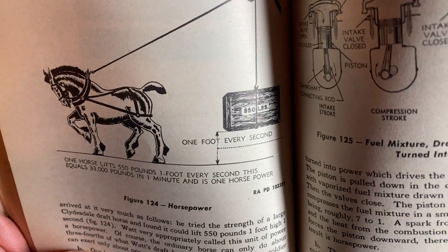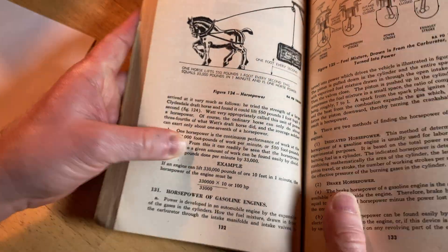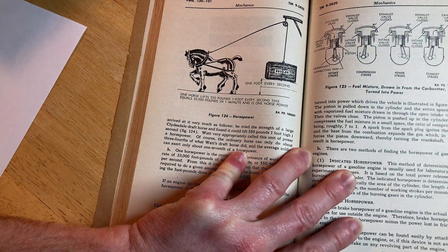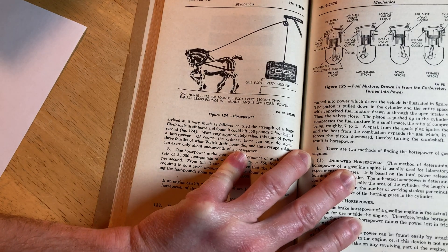So it says one horse lifts 550 pounds one foot. Oh, I can maybe just zoom in. Maybe a little... I can see a little bit better. One of my lights here.